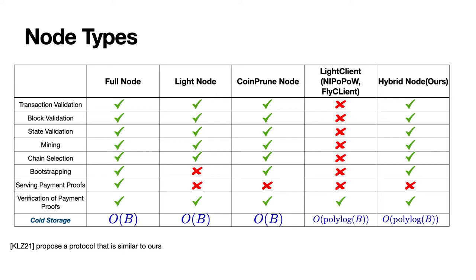Here is a table showing some types of nodes. First is a full node, which stores the entire blockchain and the state. Since it stores all the information corresponding to the blockchain, it is able to perform all the functionalities just described. However, its storage requirement is very large and grows in the size of the blockchain — here B is the number of blocks at any point in time. The next type is a light node, which has all functionalities except for bootstrapping other nodes and serving payment proofs. Its storage requirement is much smaller than a full node but still grows in the size of the blockchain.